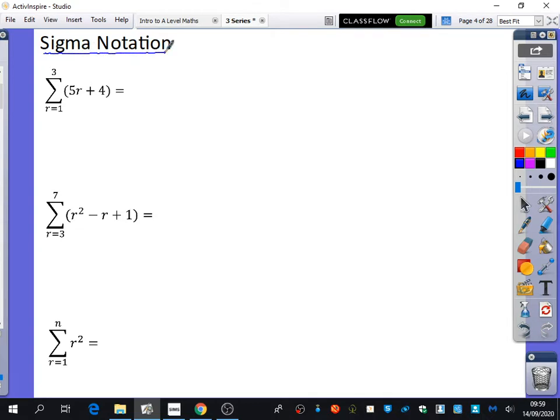Have you ever heard of the word sigma before? Sigma is this symbol that we've got here, and it's got some interesting properties. It's a type of notation that, like all notation, gives an instruction to the reader. And sigma notation is to do with summing things up, to do with adding things up.